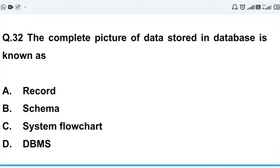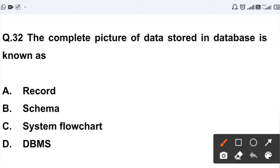Question number 32: The complete picture of data stored in database is known as - Option A: record. Option B: schema. Option C: system flowchart. Option D: DBMS. So the data stored in database, the complete picture is called schema. There will be option B. Option B is the correct answer, schema.